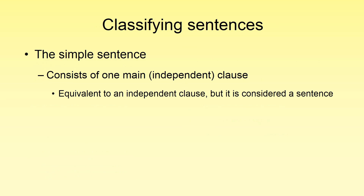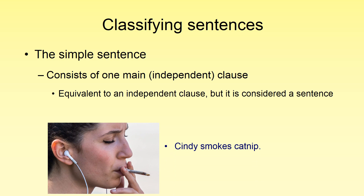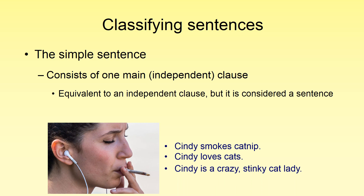We're going to start this video off with classifying sentences. There are names for different types of sentences, so this should be pretty simple if we've understood the concepts so far. The simple sentence is an independent clause standing on its own. For example, 'Cindy smokes catnip' — Cindy is our subject, smokes is our verb. Other examples: 'Cindy loves cats' and 'Cindy is a crazy stinky cat lady' are also simple sentences.